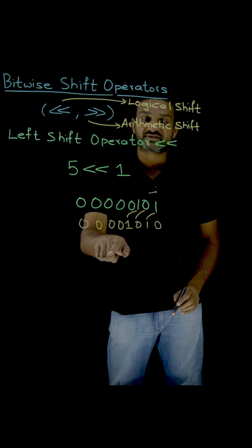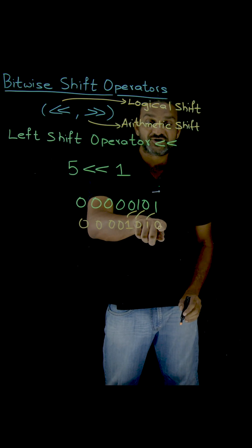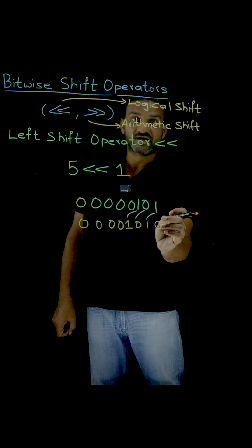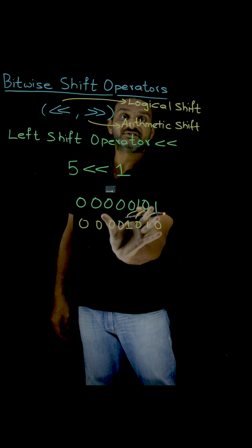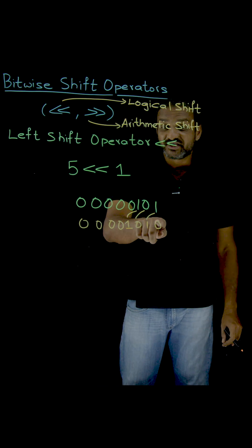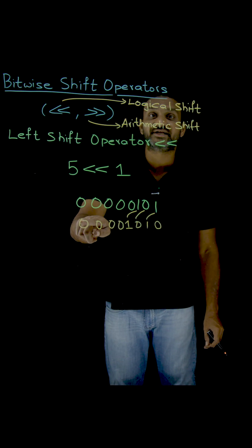Now, how many bits are there? 8 bits are there. This is the new bit that is getting inserted after doing the left shift operation. So, this is how the left shift operation is done.